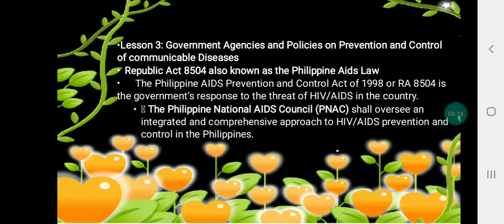Government agencies and policies on prevention and control of communicable diseases: Republic Act 8504, also known as the Philippine AIDS Prevention and Control Act of 1998, is the government's response to the threat of HIV and AIDS in the country. The Philippine National AIDS Council, or PNAC, shall oversee an integrated, comprehensive approach to HIV and AIDS prevention and control in the Philippines.